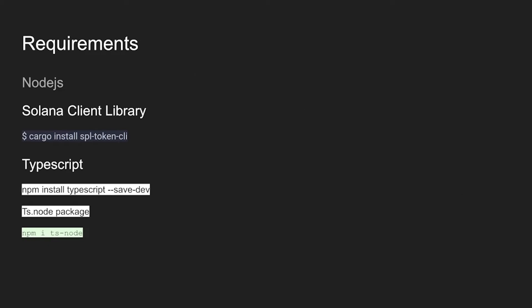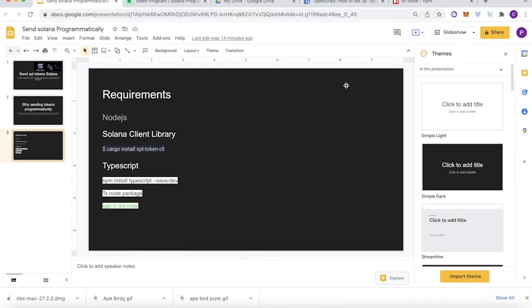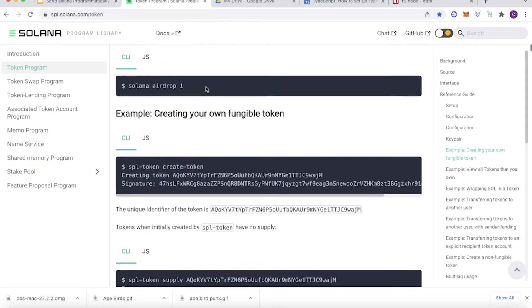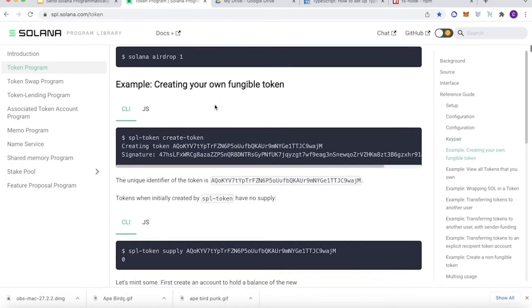The requirements are Node.js, the Solana client library, and the SPL token client — you can install it right here. You also need Rust, TypeScript, and the package manager ts-node. Here's all the documentation of the program library.